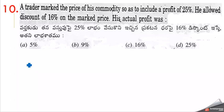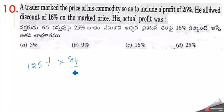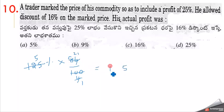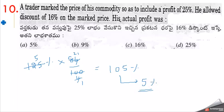The trader marks up 25% profit on cost price, so marked price is 125% of cost. He gives a 16% discount on the marked price. Selling price equals 84% of 125% equals 84 into 125 by 100. That equals 105%. So actual profit is 105% minus 100% equals 5%. The answer is 5% profit, option C is correct.